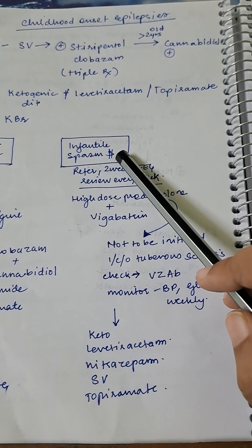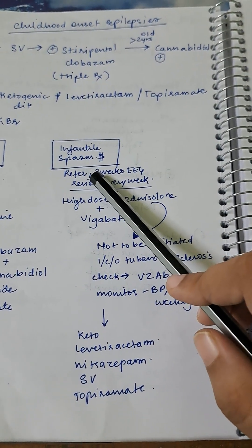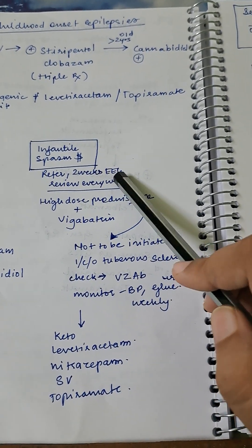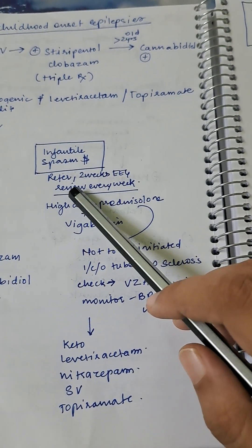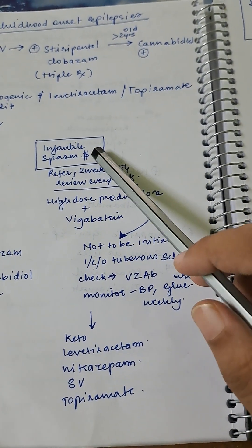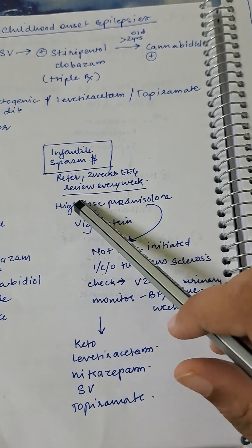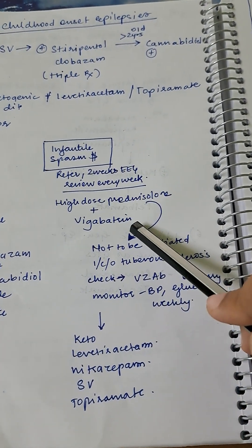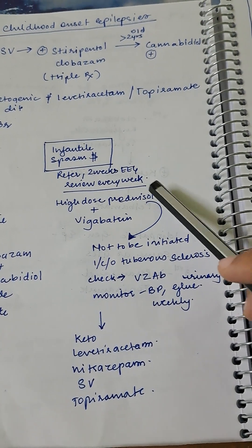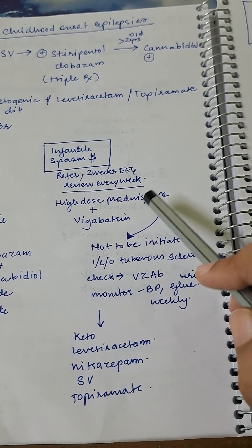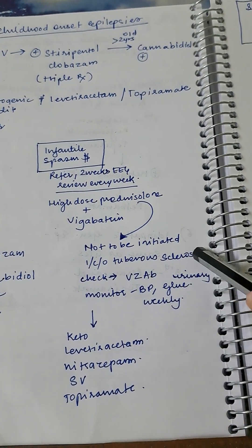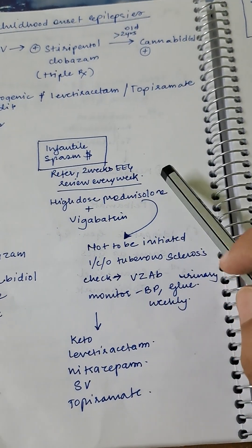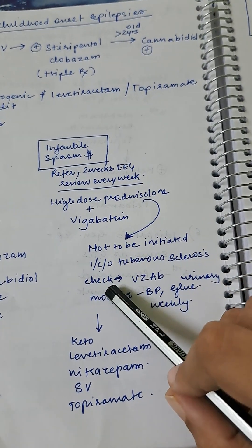In this case you have to refer to a pediatrician. After two weeks you have to get an EEG and you have to review the patient every week when starting the treatment. In this case you will start with high-dose prednisolone and vigabatrin. Now this higher-dose prednisolone is omitted in case of tuberous sclerosis. When starting high-dose prednisolone in children, you will check the varicella zoster antibody.